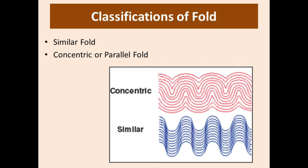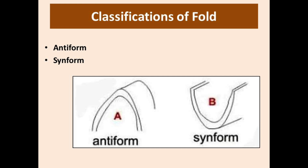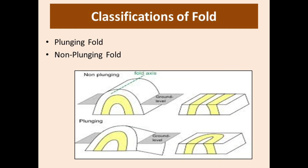It is important to distinguish antiform from syncform, as these are different from anticline and syncline. In an antiform, the fold is concave downward but the age of rock is not known. If we know the age of rock, then it is an anticline. In a synform, the fold is concave upward and the rocks in the middle may not be younger — age is not known.